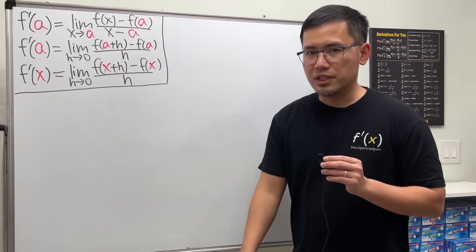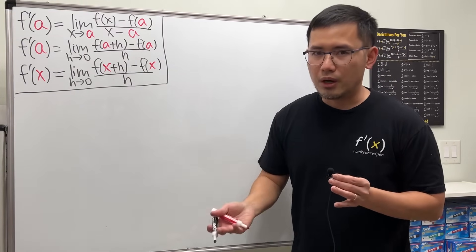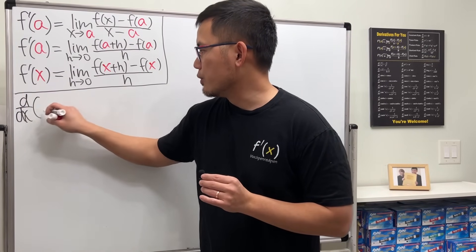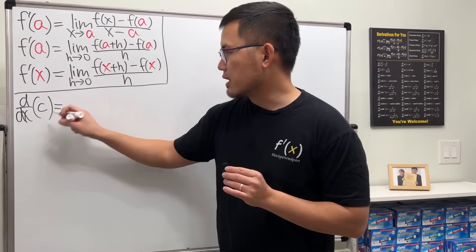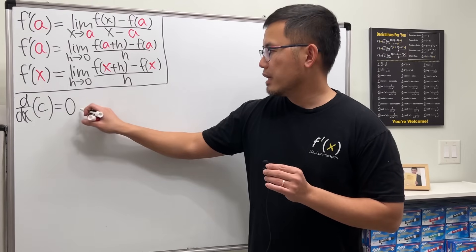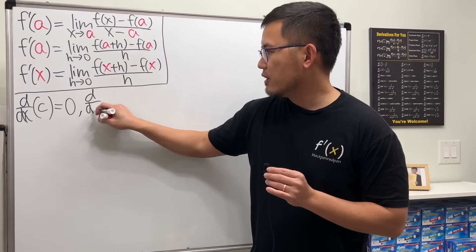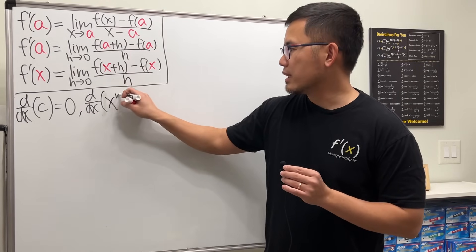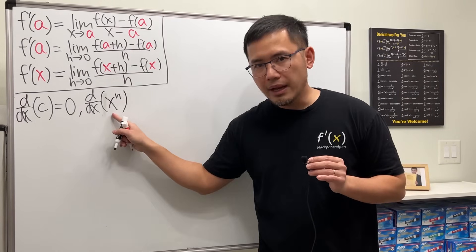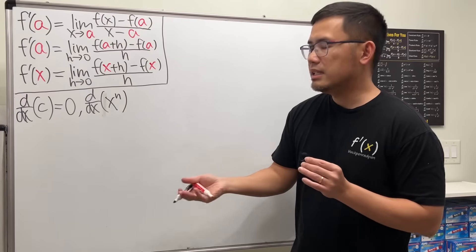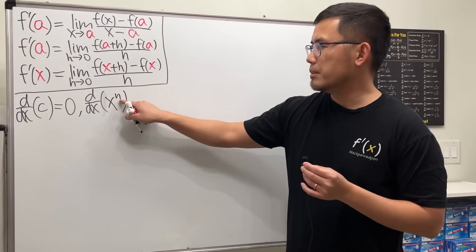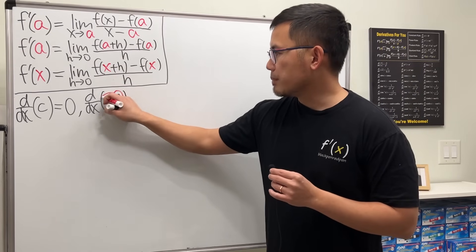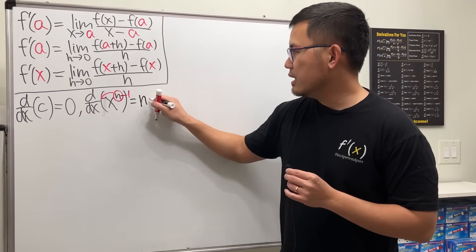After the limit definitions, here are the differentiation rules. The first one is the constant rule: the derivative of a constant c is just zero. Next is the power rule — everybody's favorite. Taking the derivative of a power function x to the n, where n can be any number — 17, pi, negative 2, etc. — you bring the power to the front and subtract 1, giving you n times x to the n minus 1.